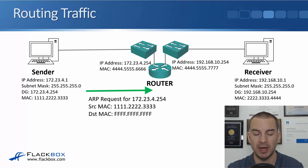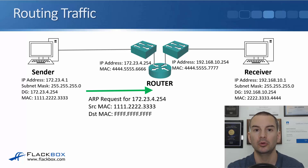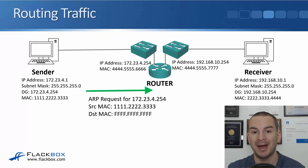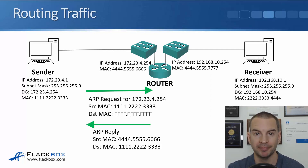The ARP request comes from the sender's source MAC of 1.2.3. The destination MAC is, as usual for an ARP request, ff.ff.ff — the Layer 2 broadcast address. The request asks 172.23.4.254 for its MAC address. That broadcast hits everything in the 172.23.4.0 subnet, including the router.